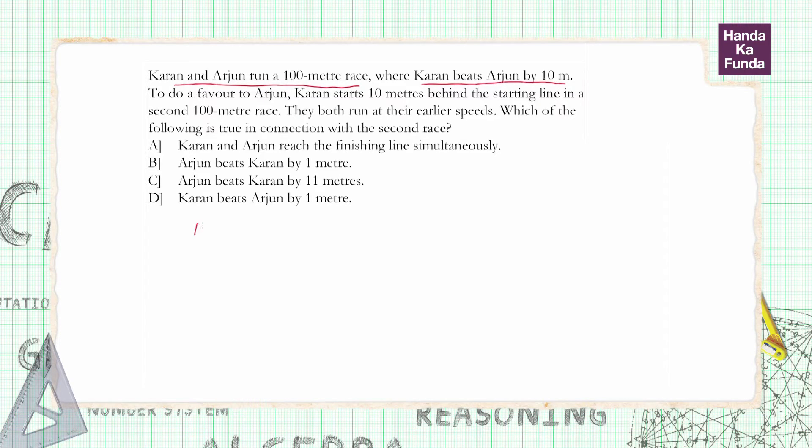This means when Karan covers 100 meters, Arjun would have covered 90 meters, or we can say that their speeds are in the ratio of 10 is to 9. Let's assume speed of Karan is 10 meters per second and